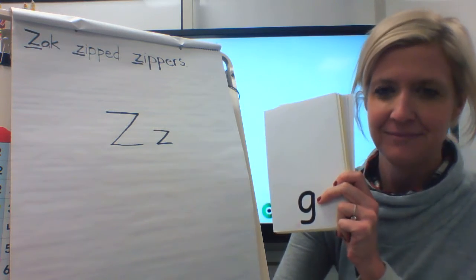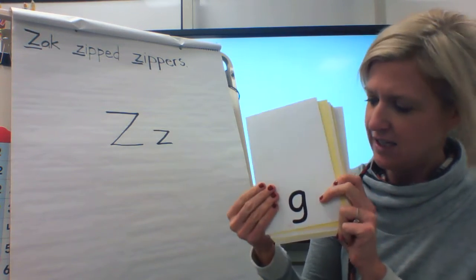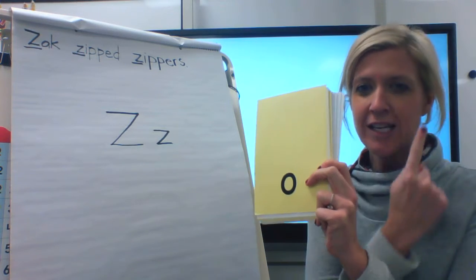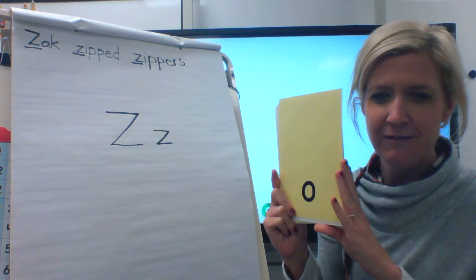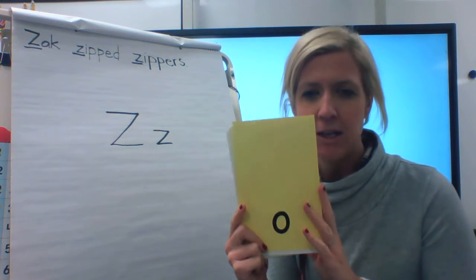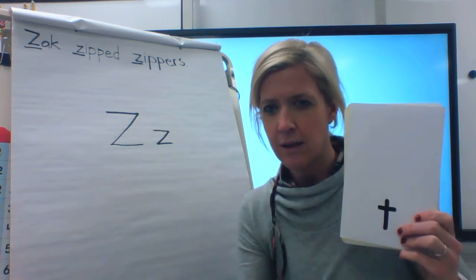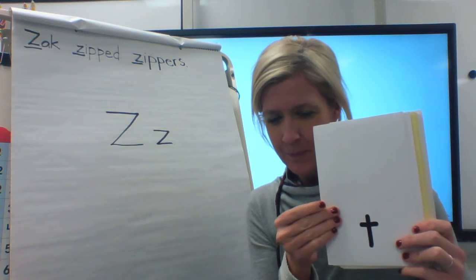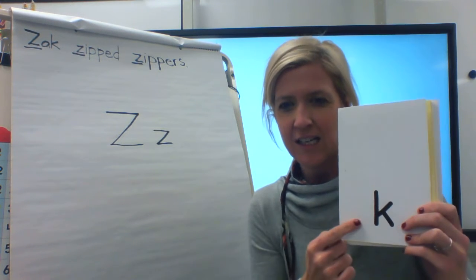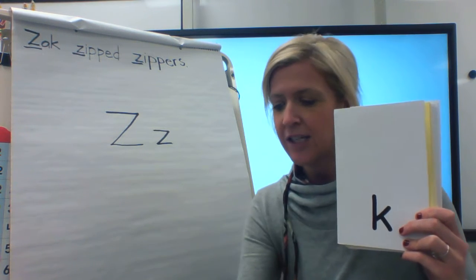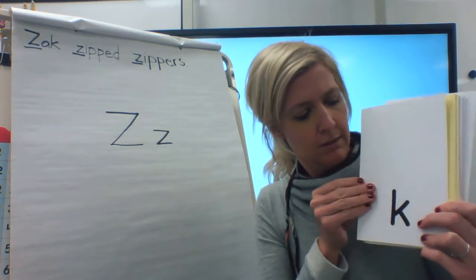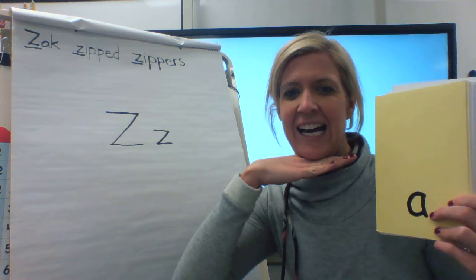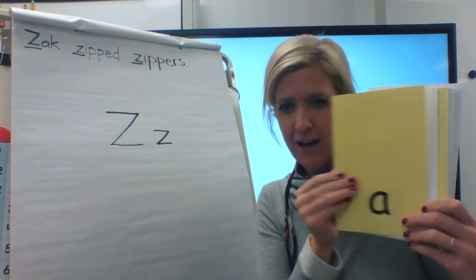C says k, G says guh, O says aw, and remember that these yellow cards are vowels. We find vowels mostly in the middle of a word. Let's keep going. T says t, K says k, that's right, we have two letters that make the same sound, k. A says ah, another vowel.